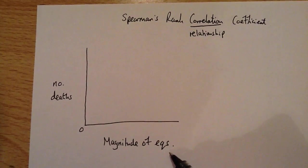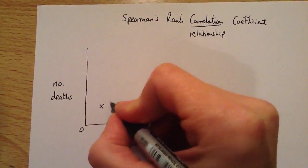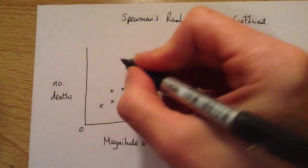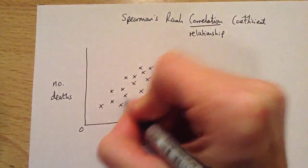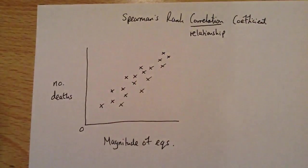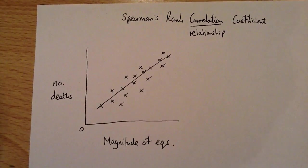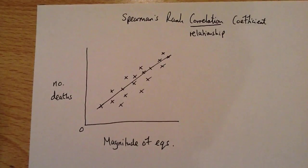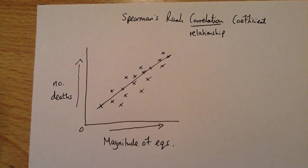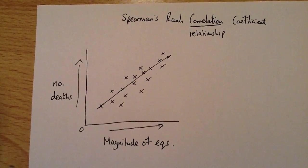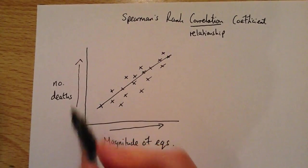If you want to find if there's a relationship between two variables, the usual thing to do first is to plot your data on a scatter graph. So for all your different earthquakes, having got the information on magnitude and the corresponding number of deaths, you may have a spread that looks something like this and you can draw a crude line of best fit. Using your geographical eye, you can say yes, there is a relationship between magnitude of earthquakes and number of deaths. And Spearman's rank correlation coefficient actually proves statistically if there is a correlation or relationship between them.